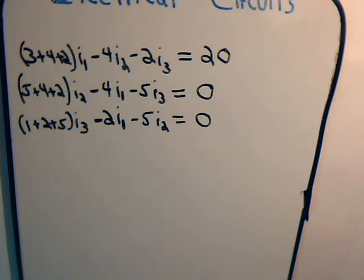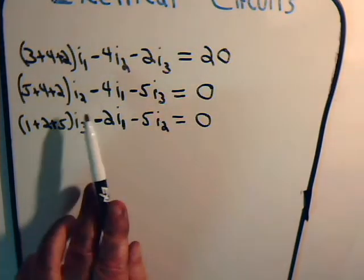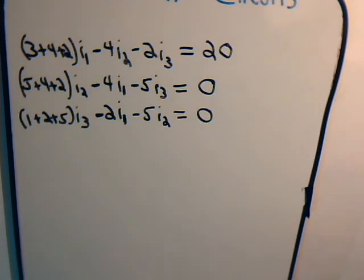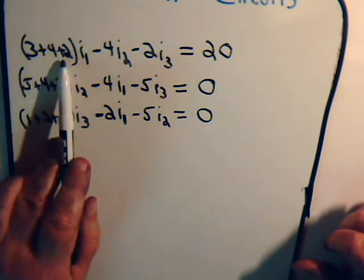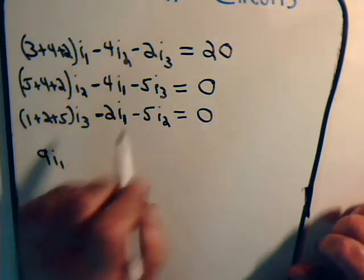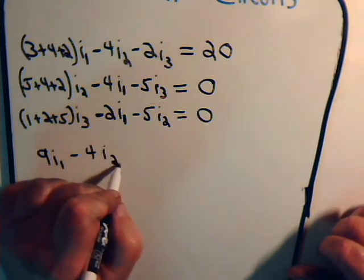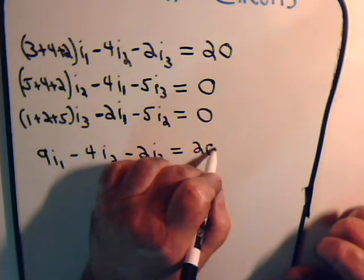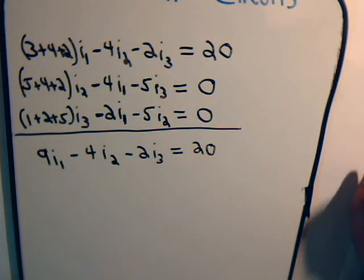We now have our three mesh equations with three unknowns: I1, I2, and I3. Rewriting them: (3+4+2) = 9 times I1 minus four times I2 minus two times I3 equals 20. Then minus four I1 plus (9+2) = eleven times I2 minus five I3 equals zero. And minus two I1 minus five I2 plus (5+3) times I3 equals zero.